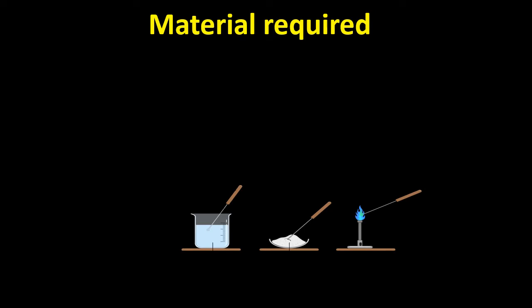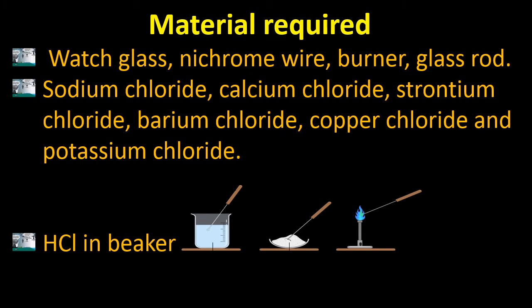Whenever we have to do something practically, one very important thing is knowing how we are going to do it and what materials are necessary. In case of this experiment, the required materials are a watch glass, nichrome wire, burner, and glass rod. We need salts of sodium, calcium, strontium, barium, copper, and potassium — we will use their chlorides as they are available in laboratories.